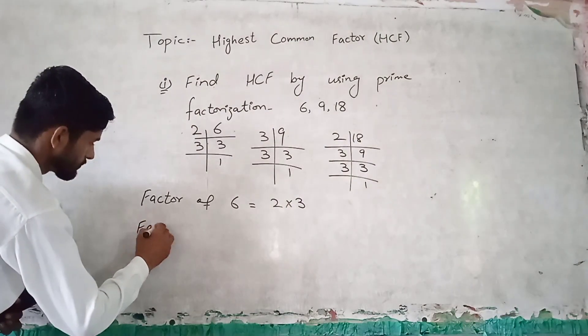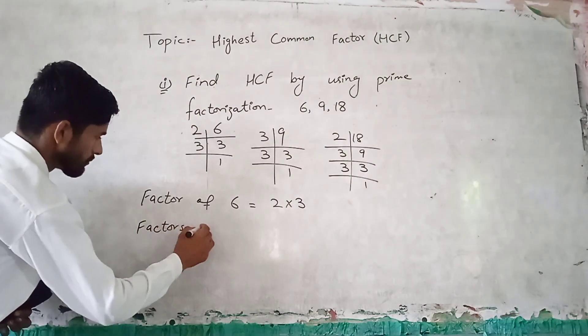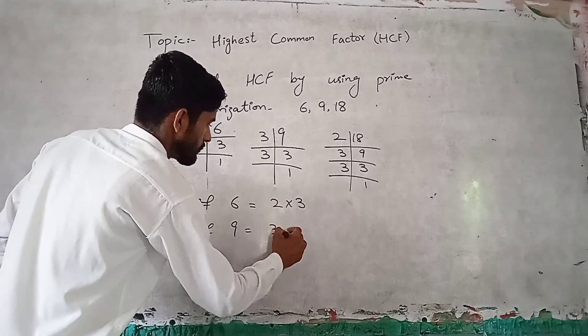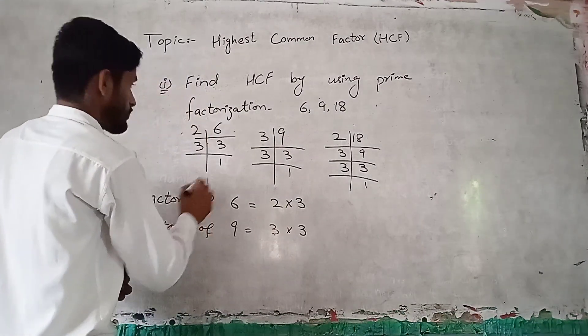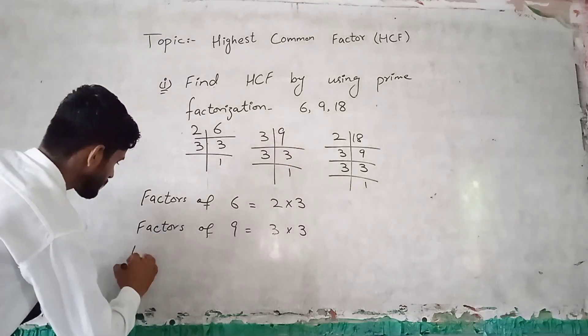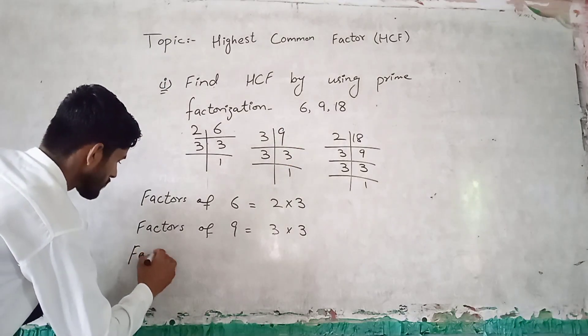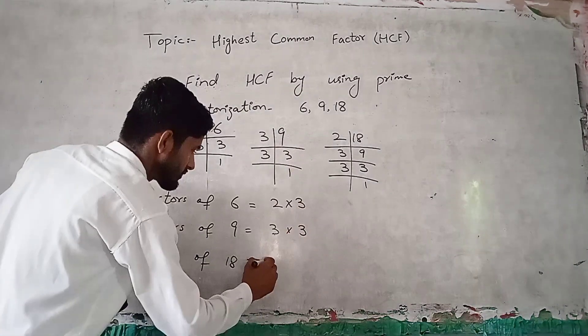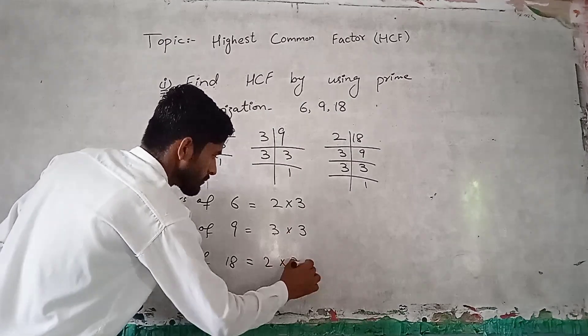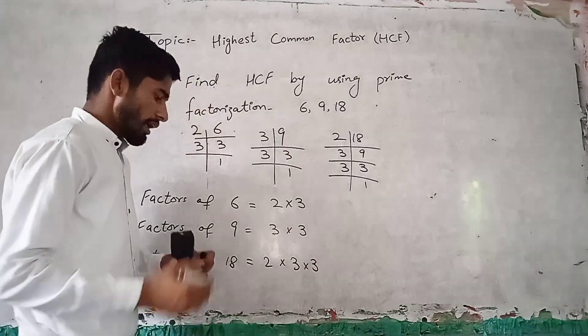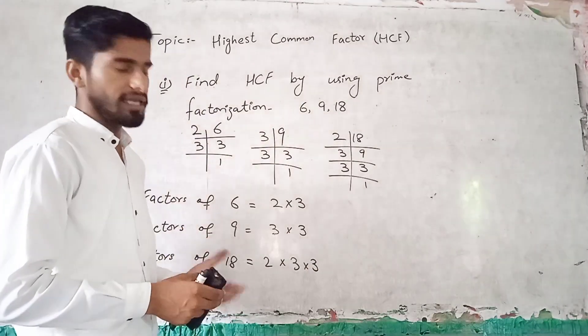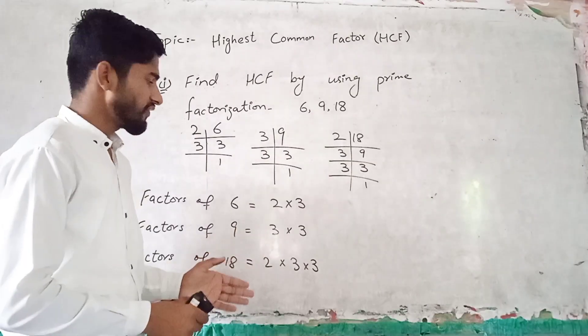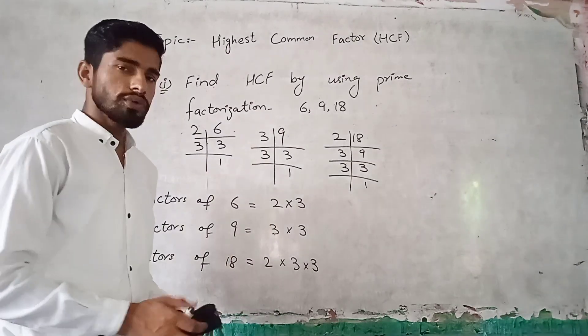This is 9, this is 18, these are the 18 factors. We have seen these factors. So if we look at these factors, three groups are common, they are arranged in a circle.